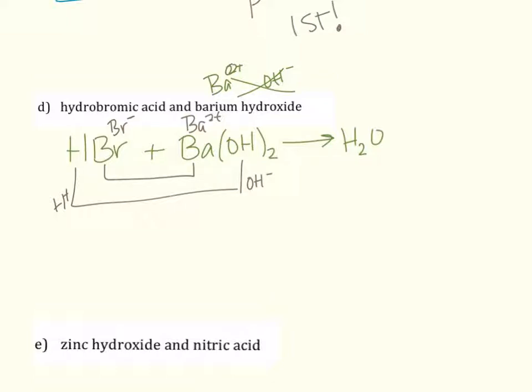Alright, so when we make a compound between those two, remember barium has to come first. So it's 2 plus. Bromide is 1 negative, and so it's going to be BaBr2. Now we've got to balance the equation.